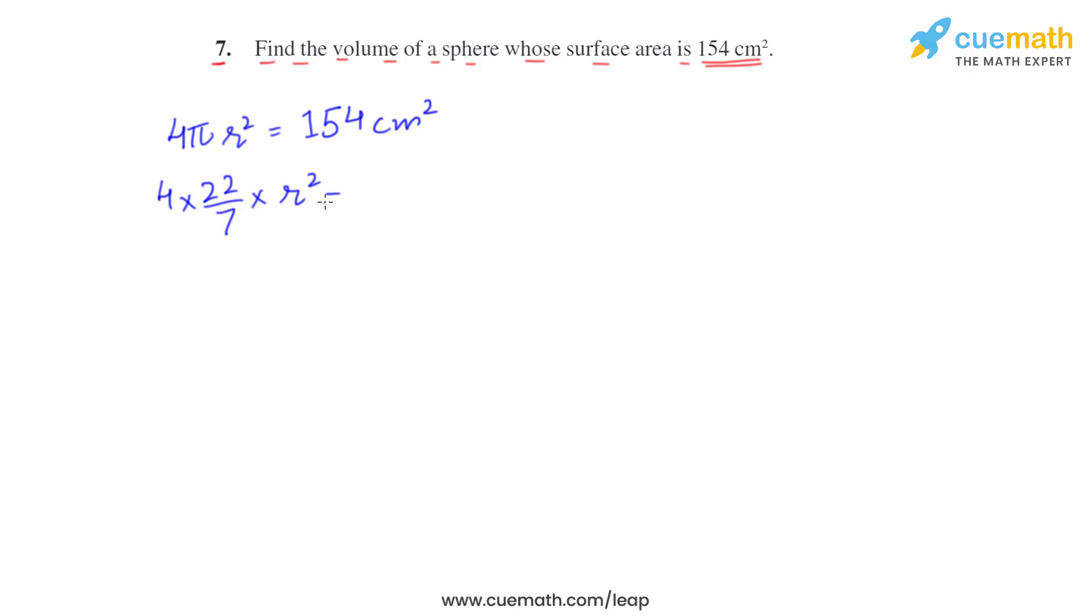Now when we solve for r, we have to take 4 and 22 by 7 to the right side, so they will get reciprocaled. 154 multiplied by 1 by 4 multiplied by 7 by 22.